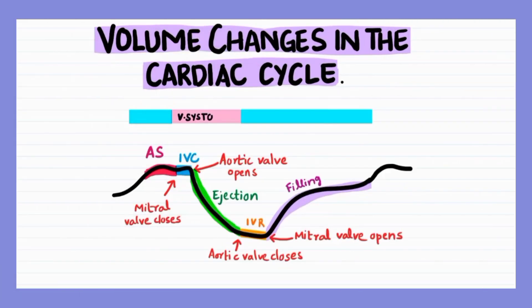Let's move on to understanding some important terms such as end diastolic volume, end systolic volume, stroke volume, ejection fraction, and cardiac output. The volume left in the ventricles at the end of diastole is called the end diastolic volume, and is around 140 ml.